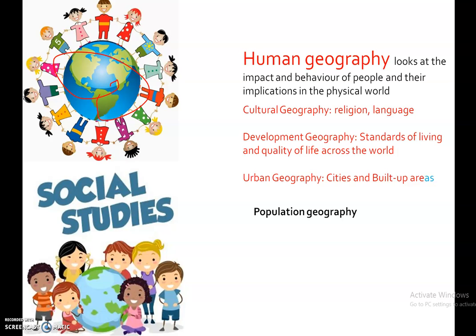Human Geography consists of a number of sub-disciplinary fields that focus on different elements of human activities and organization — for example, cultural geography, health geography, economic geography, rural geography, urban geography, and social geography. Cultural geography is the study of cultural products and their variation across space and places. It also focuses on analyzing religions region-wise or country-wise, as well as language, economy, and social geography.